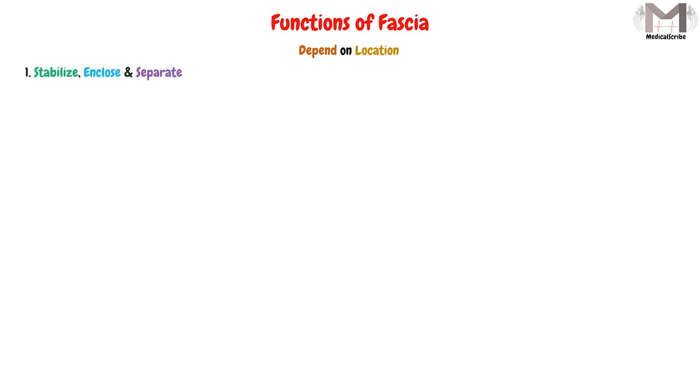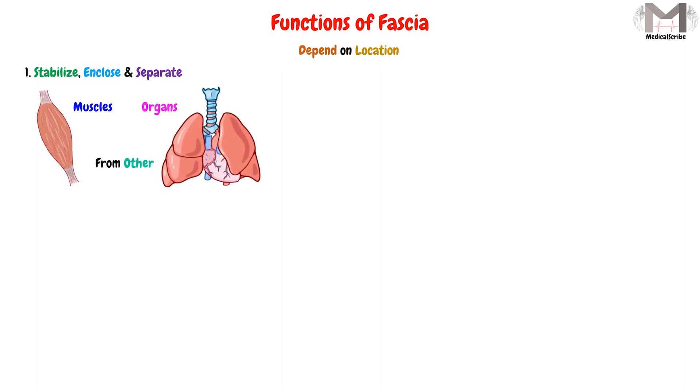The last thing in our video we have to know today is the functions of this fascia. We should keep in mind that the fascia function mainly depends on its location, but we can summarize the main functions of fascia into five functions. The first function is that the fascia will stabilize, enclose, and separate muscles and organs from others.